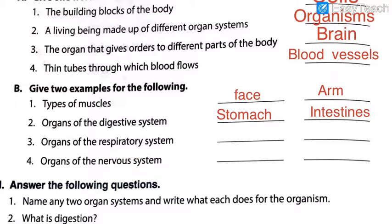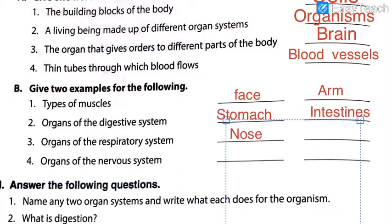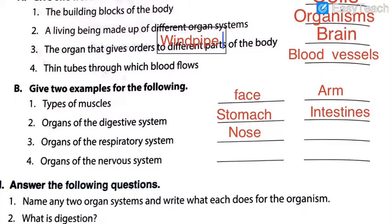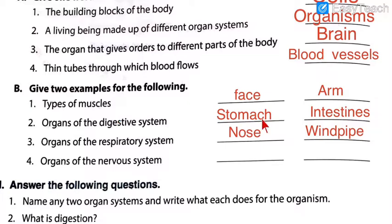Going back to the page 92 summary part, the respiratory system consists of organs like nose, lungs, and the wind pipe. You have to write any two — I will write nose and wind pipe. Please write the answers whenever you see me typing. Especially those writing in the rough notebook: answer 1 — face, arm; answer 2 — stomach, intestines; answer 3 — nose, wind pipe. Write this way so you can understand later that these are two examples.